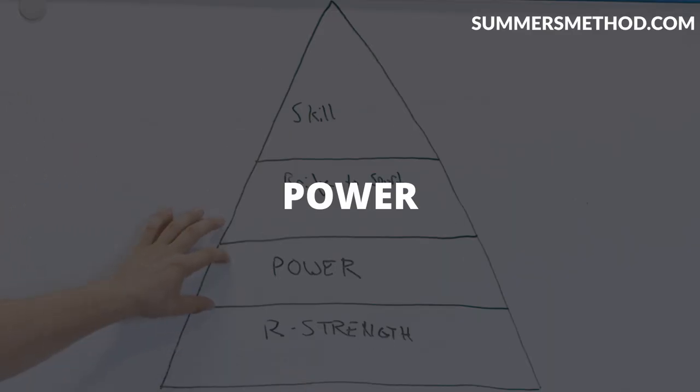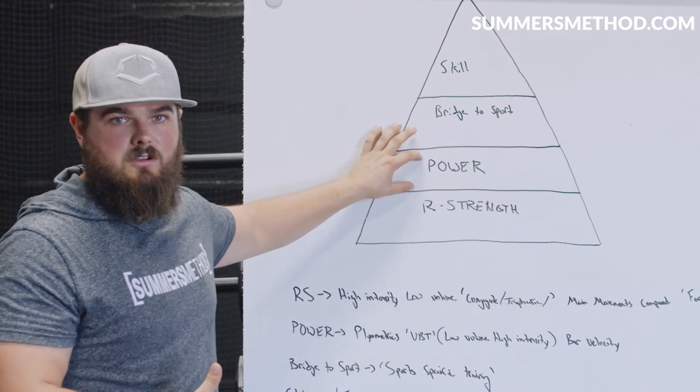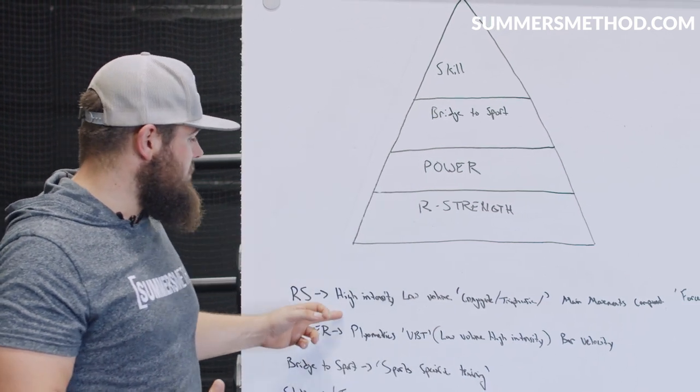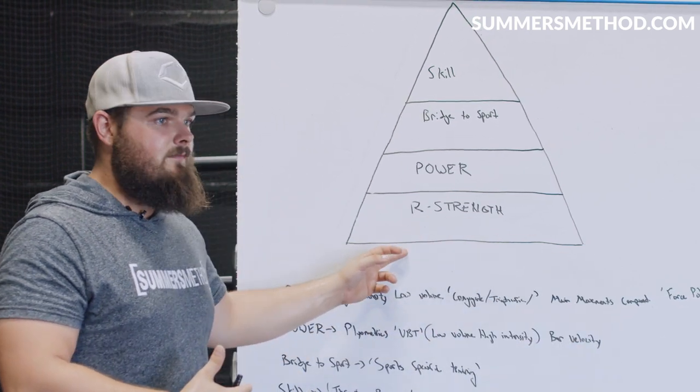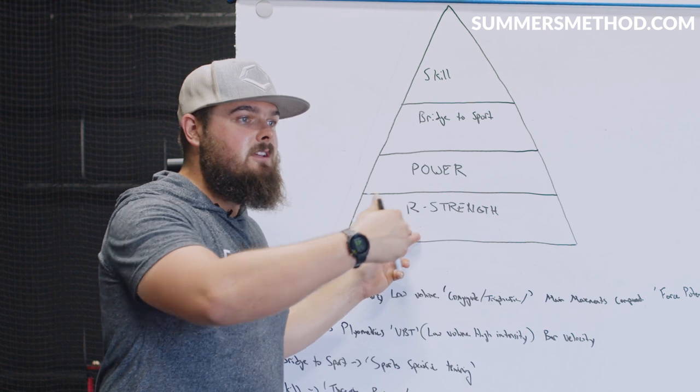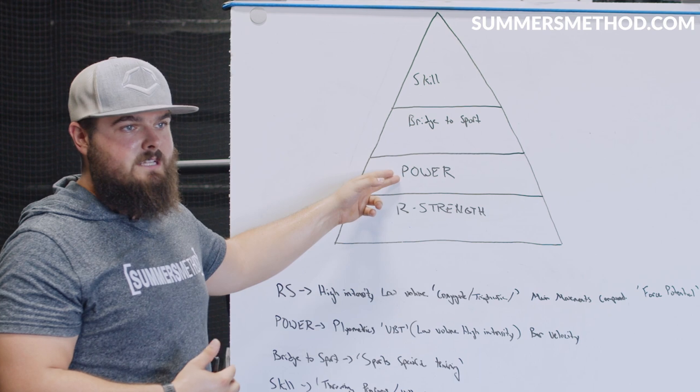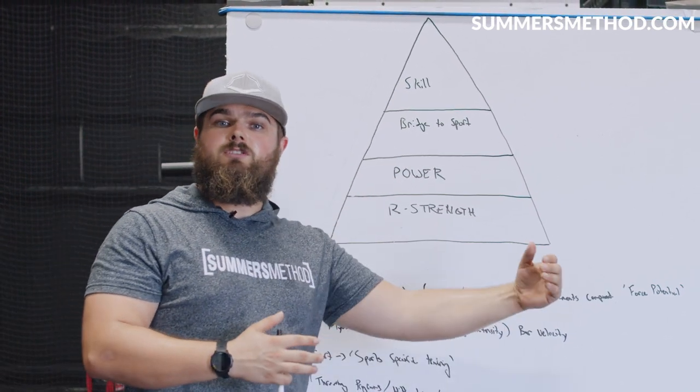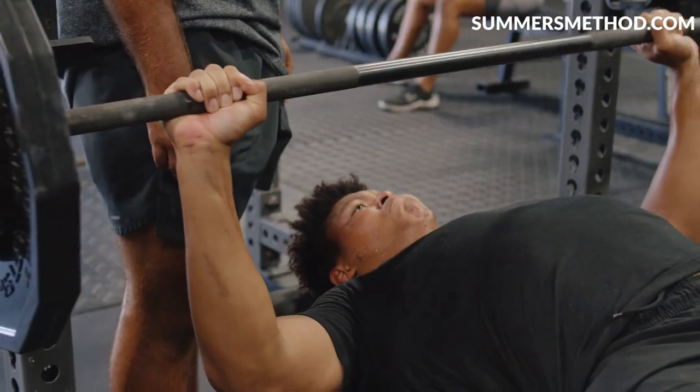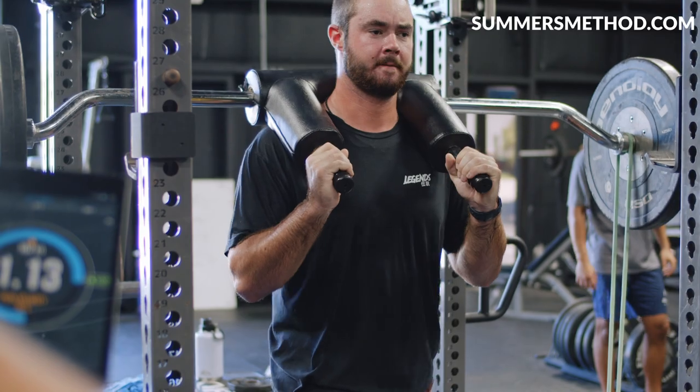Next is power. It's not enough just to be strong in this sport. We have to be powerful. So now we have to bridge this relative strength that we've built, whether that's the first 14 weeks of a program, 10, 12, depending on the person, we have to bridge that to power. And what is power? Power is the rate at which you can produce that strength. So now instead of our slower, heavier exercises, we're going to have to move them fast.